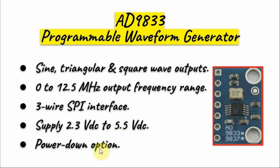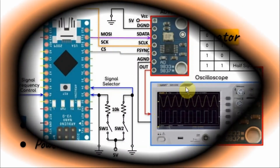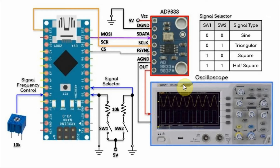To lower the power consumption, there is an option where you can power down the module. A block diagram of the implemented system is shown here. We have the AD9833 module connected with the Arduino using SPI, where the serial data line is connected to the master output slave input line of the Arduino, which is pin D11.